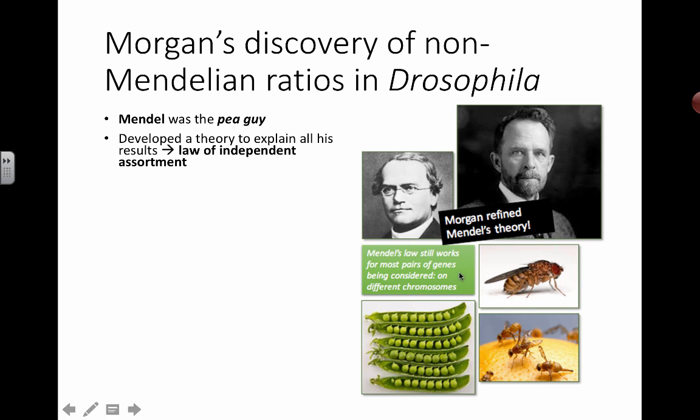His rules still apply, but there was some other evidence that arose later in the 20th century which didn't seem to fit. The question was: was Mendel totally wrong, or is this more information that adds to his theory?